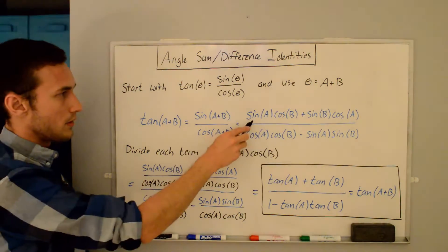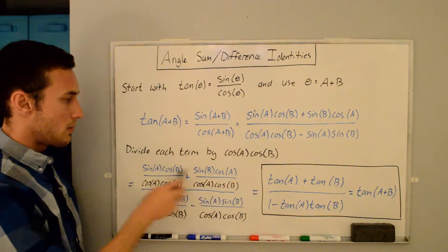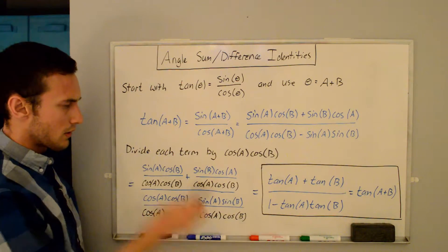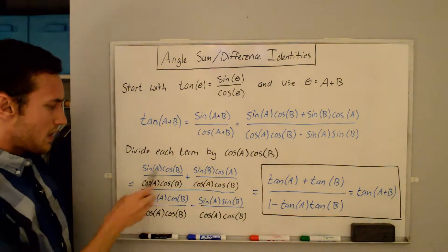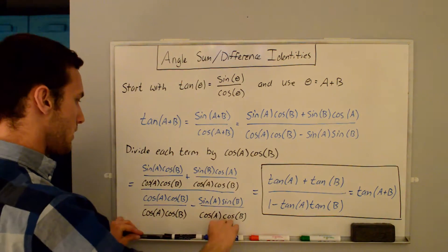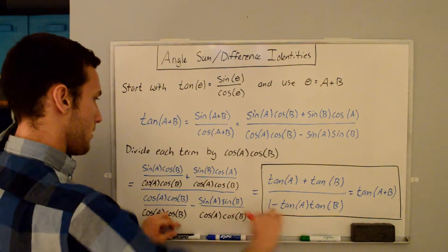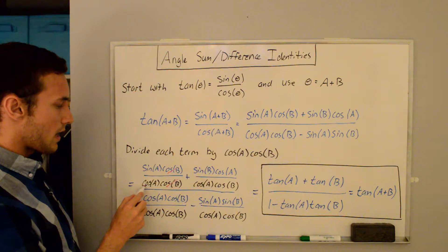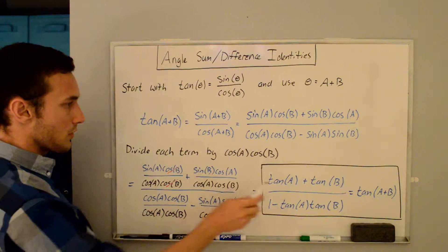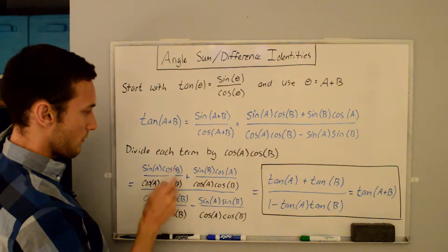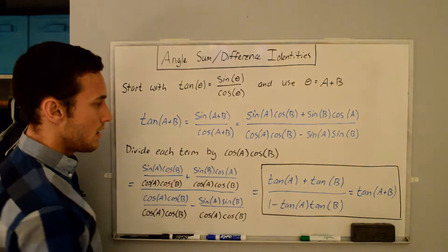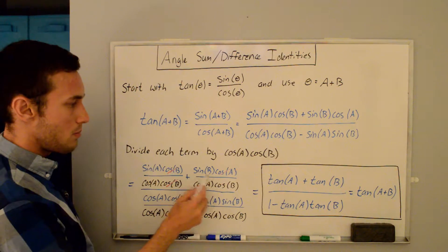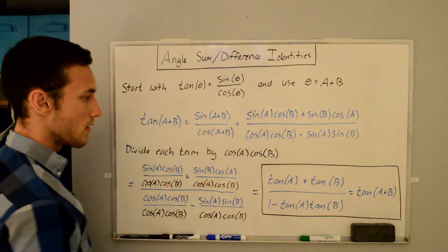If we take each term and divide it by cosine a cosine b, we get the following expressions for each term. Now we just need to cancel some of these terms. In this equation, cosine b over cosine b cancels, and so we have sine a over cosine a — that's just tangent of a. So the first term ends up being tangent of a. For the second term, cosine a over cosine a cancels and we get sine b over cosine b, which is why we have tangent of b.